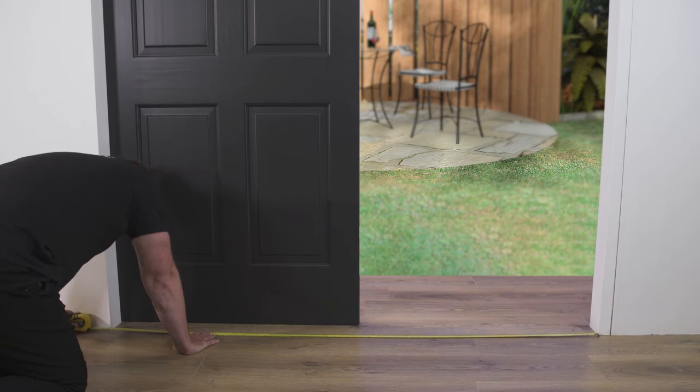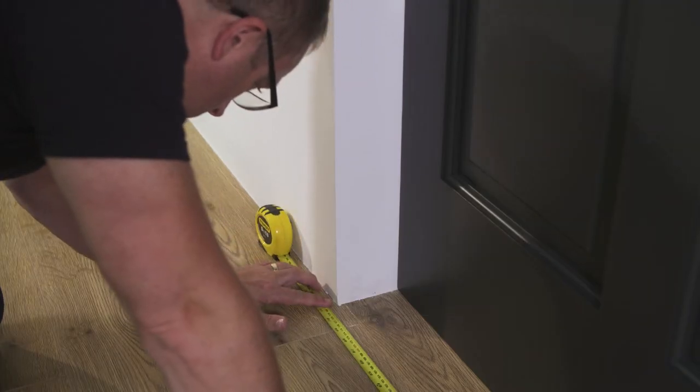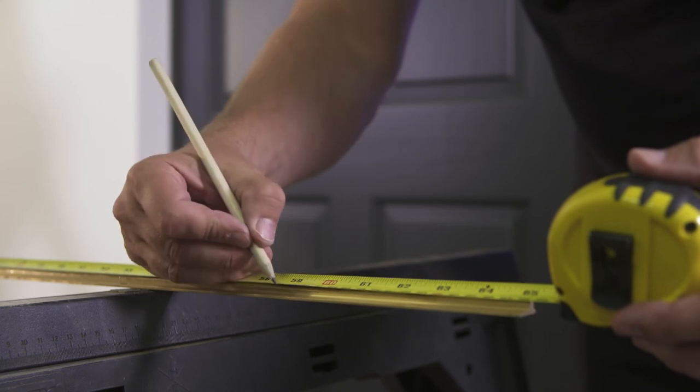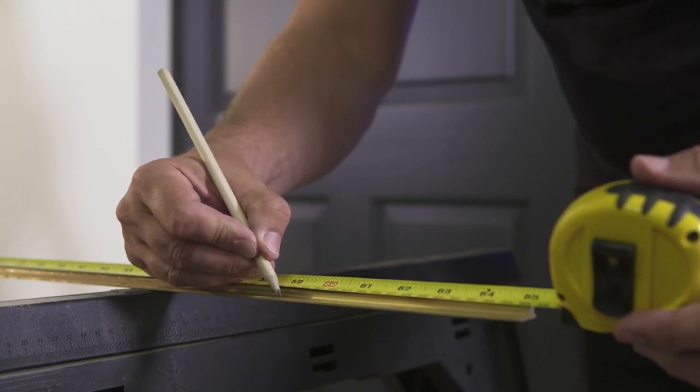Measure the full width of your opening and cut down the bronze bottom rail to suit. This measurement should be the width of your opening, minus 130 mm.